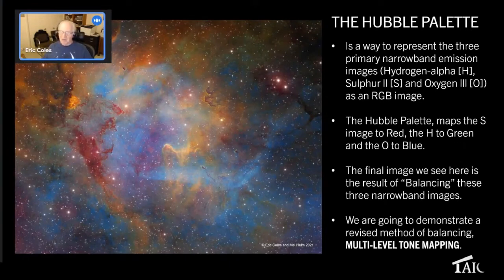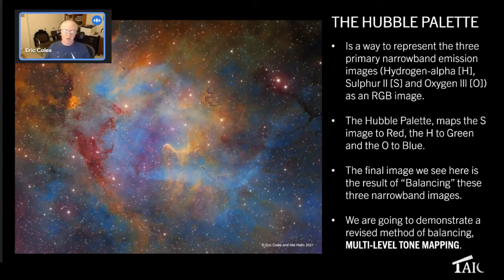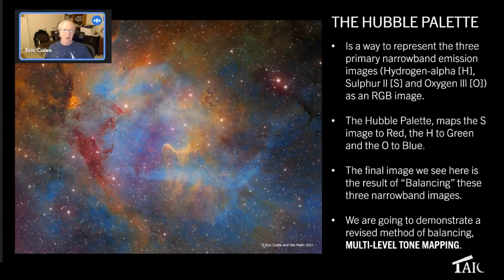We're going to discuss a slightly revised method of balancing. If you've done a Hubble palette image, you've seen this before — you go in, adjust your histogram, and now you have your image. But I think it's more complex than that: you have to actually adjust different areas of the image individually by selection in order to get the most out of the image.